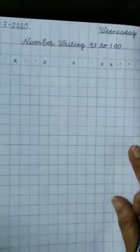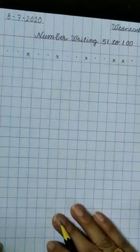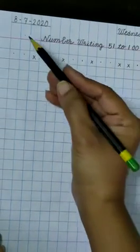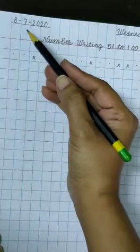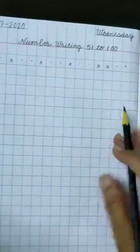Now turn over the page. In today's class, we will write the numbers from 51 to 100 and use left hand side page to write. First, write the date here. And today's date is 8-7-2020, 8th July. And today is Wednesday.